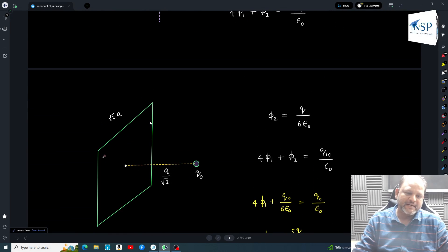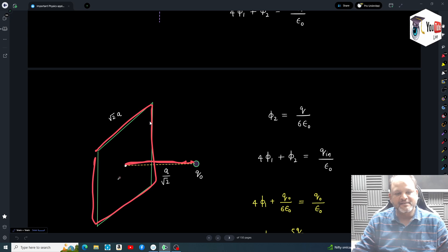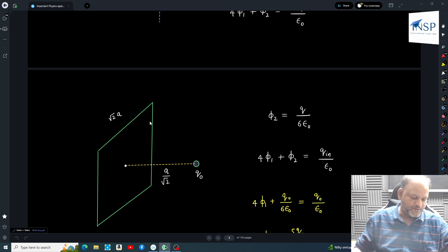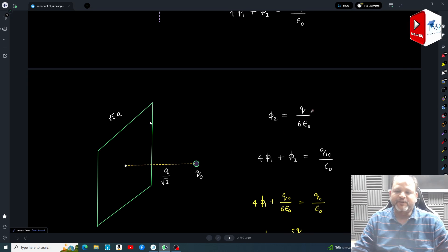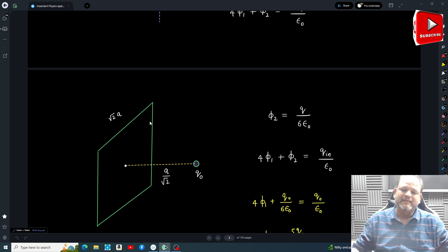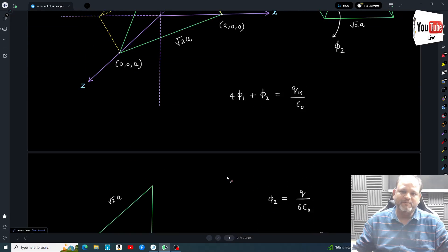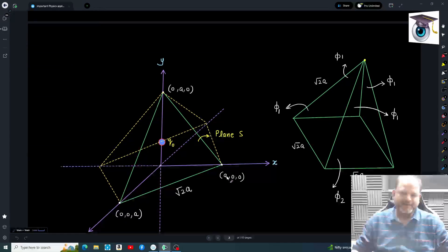But the interesting part is, if somehow I can calculate flux passing through this base due to this charge, then I'll get my answer. So luckily those distances are also very nicely arranged. This base has side length √2a, and this distance is a/√2. So the standard result we can directly take: this will become q/6ε₀. After this we know the value of φ₂, substitute this value here and simplify. We get 4φ₁ = 5q₀/6ε₀, so on solving this comes as φ₁ = 5q₀/24ε₀. This is the answer for this problem.